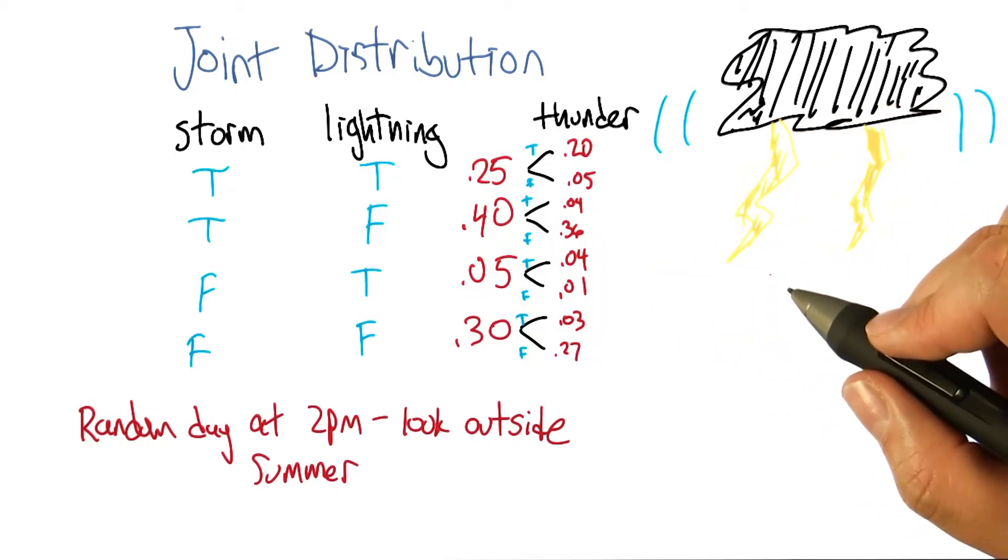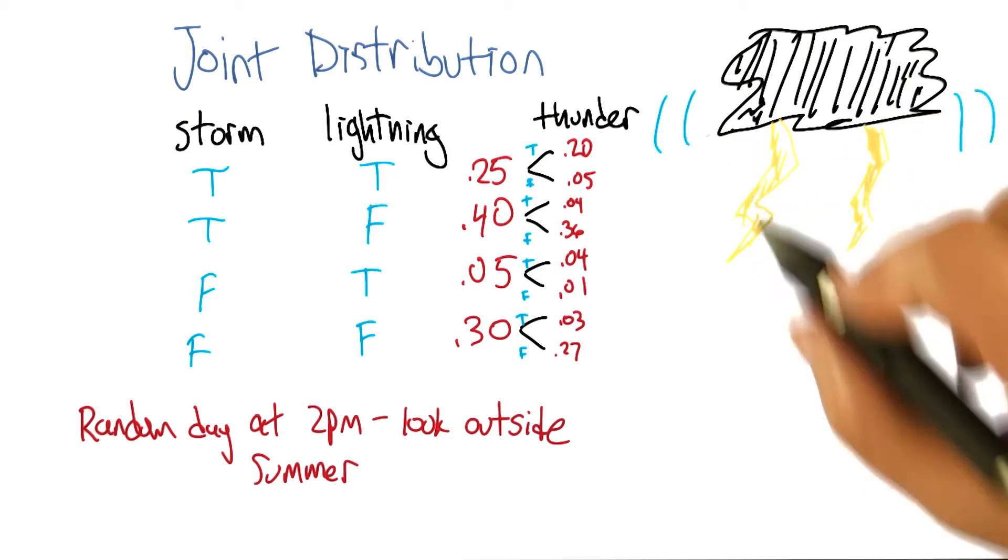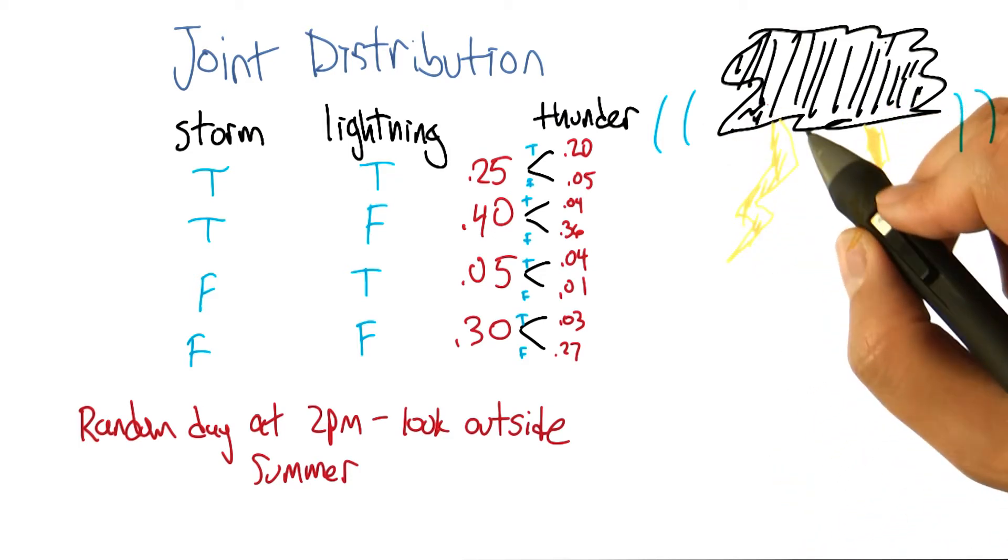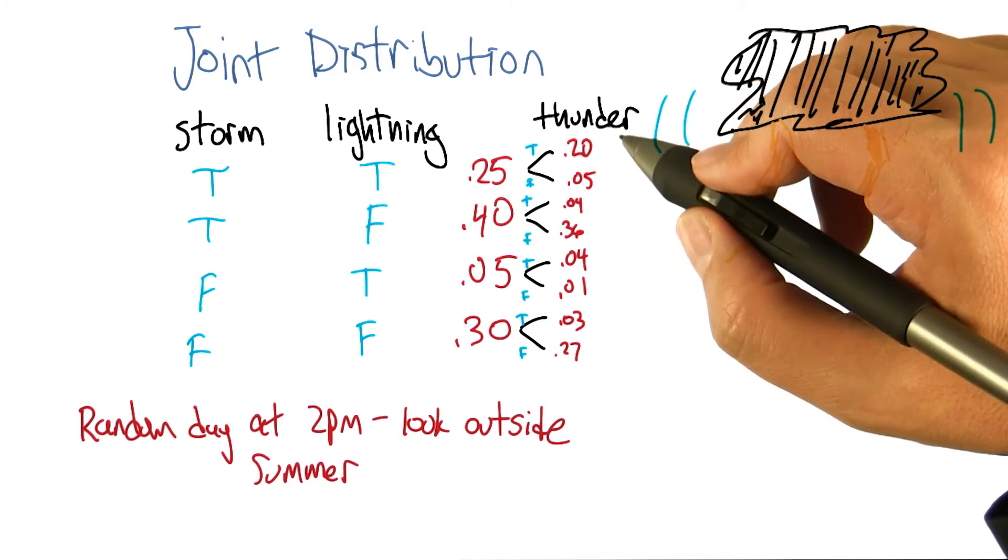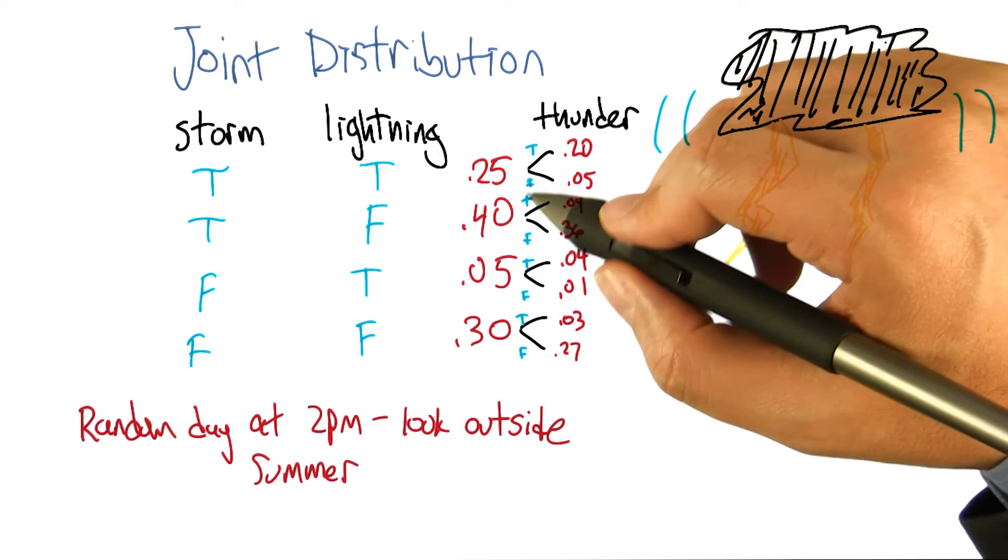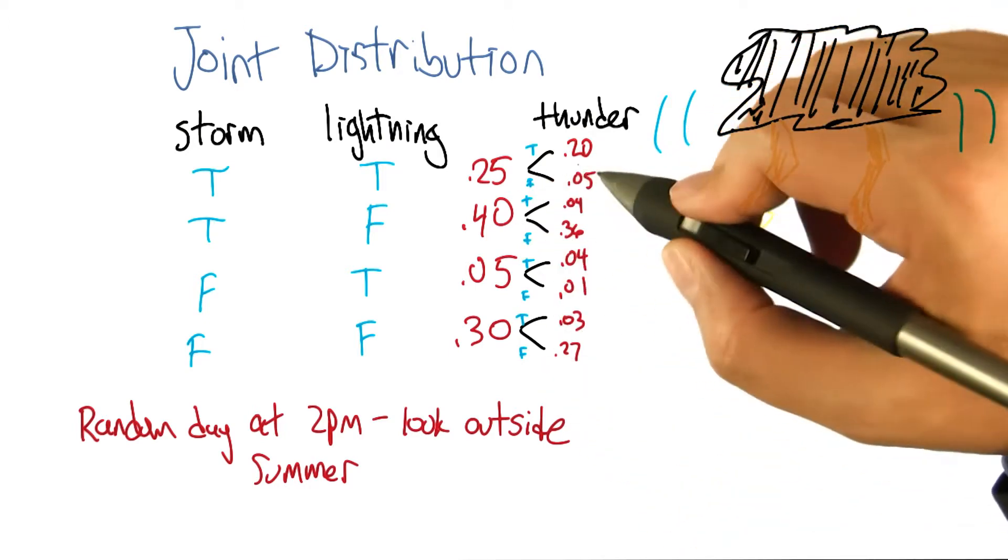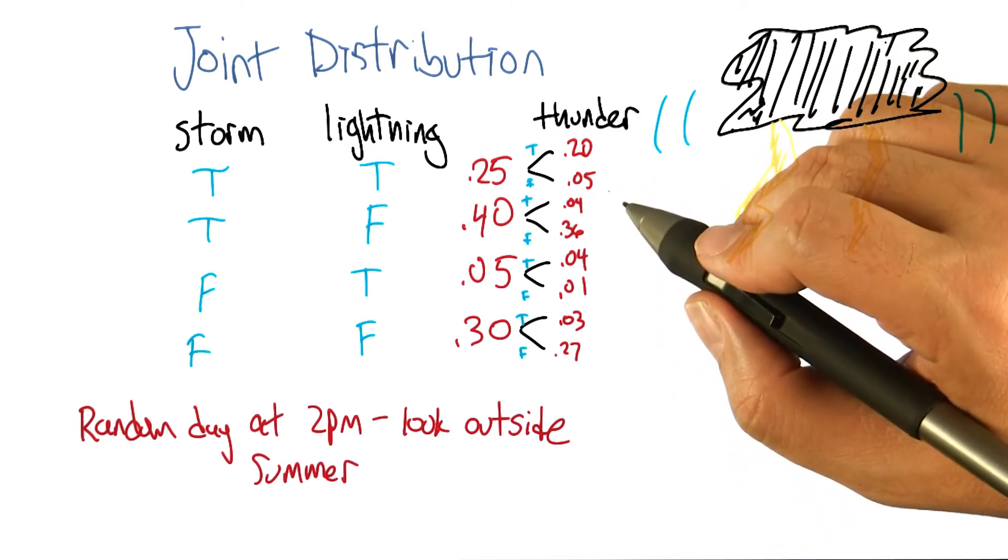All right, so that wasn't so bad. You're able to compute some probabilities from this joint distribution. So let's see what happens when we start talking about more variables, more propositions that could be true or false. What I did is I filled in thunder as another variable, and thunder can be true or false in each of these cases. And I wrote down what the probabilities could be from my experience in Atlanta in the summer.